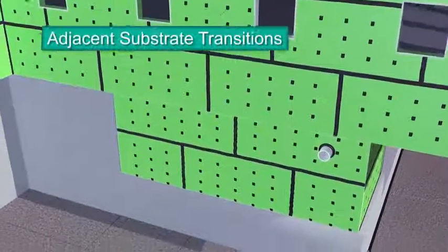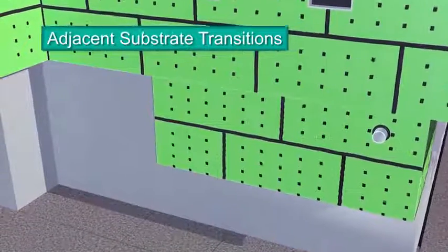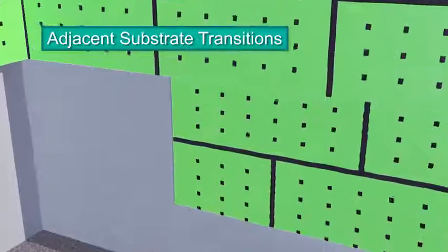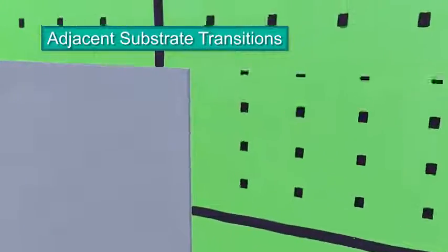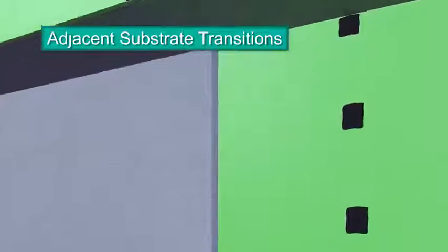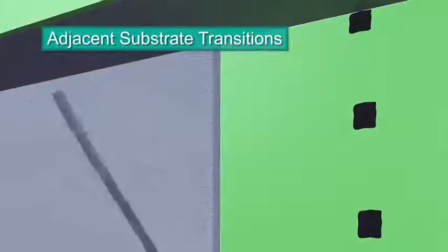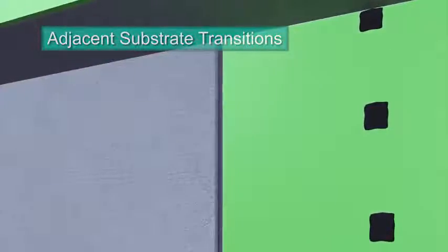When your project includes exterior sheathing in concrete or concrete masonry units, the transition must be detailed to ensure air barrier continuity. This is achieved by properly detailing the transition. First, friction fit backer rod into the gap between substrates. It should be recessed no more than a half inch.